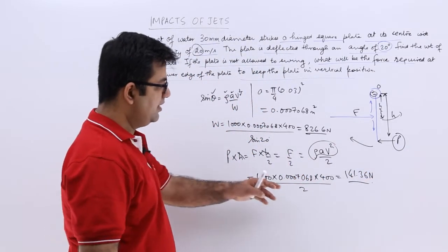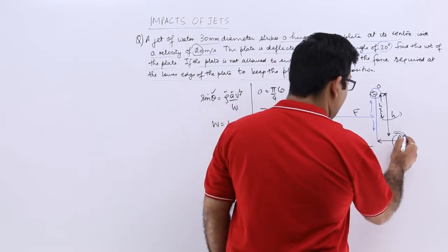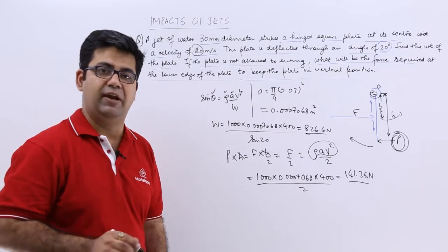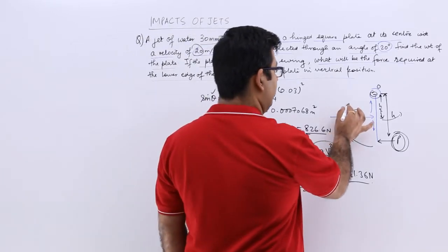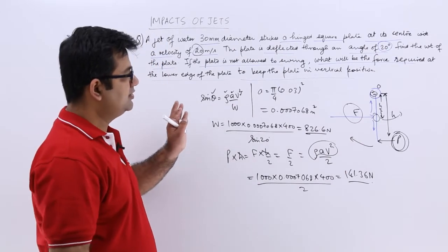So approximately 141 Newtons of force is required at point p to keep the plate from deflecting by a jet of water striking at its center. So I hope you got this question.